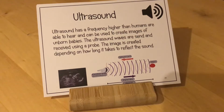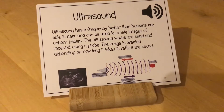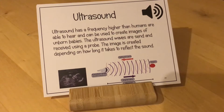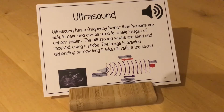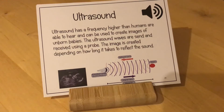Ultrasound can be used to create images of unborn babies. It is used on the mother's tummy, and the reflection of those ultrasound waves at different distances through the body helps to create the image of the unborn child. If the reflection takes a long time to return, that part of the body is further away.